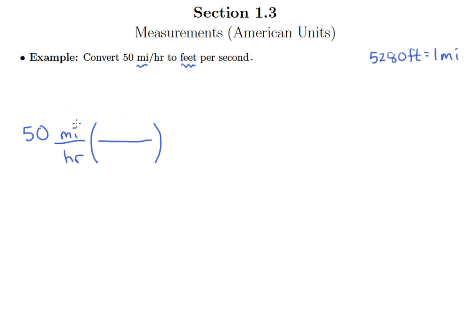And because the miles are on top here and I want to get rid of them, I need miles on bottom and the conversion factor so they cancel. So miles on bottom, feet on top, and I know there are 5,280 feet in one mile.